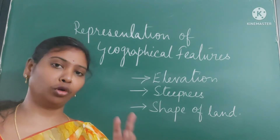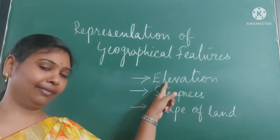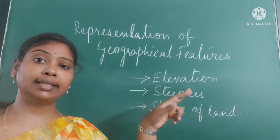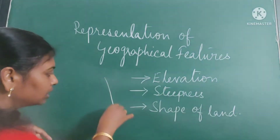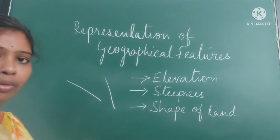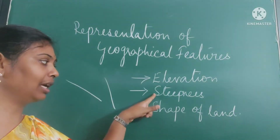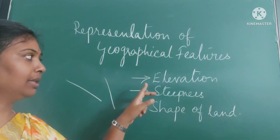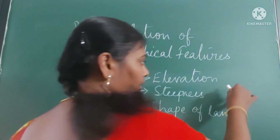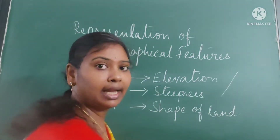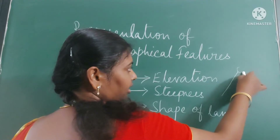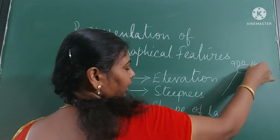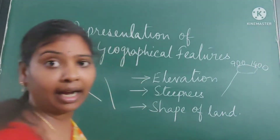Contours are used to know three things. One is elevation — that means what is the height of the land. Second is steepness — whether it is too steep or gentle. Third is the shape of the land. The number on the contour denotes the elevation; for example, 900 or 1400 metres denotes the height of the land.